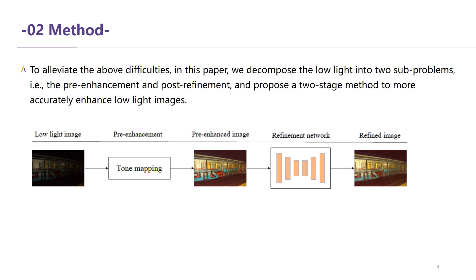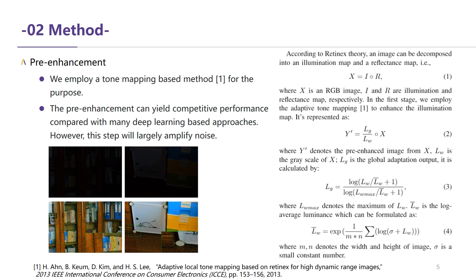To be specific, given a low-light image, we first enhance an illumination map decomposed from the low-light input. Then the pre-enhanced image is input to a refinement network to further suppress noise and improve overall quality. For the pre-enhancement, we employ a tone-mapping-based method. We observed that the pre-enhancement can yield competitive performance compared with many deep learning-based approaches in terms of illumination enhancement. However, it will largely amplify noise.